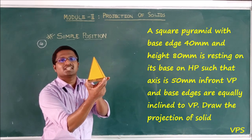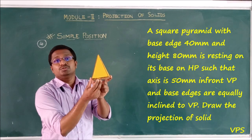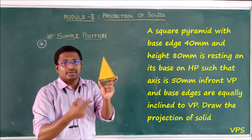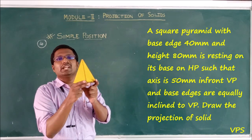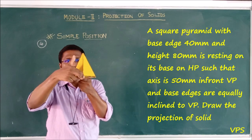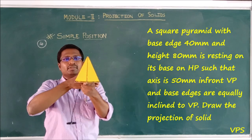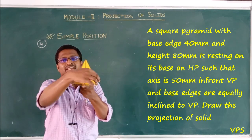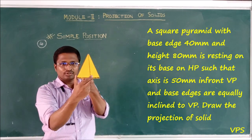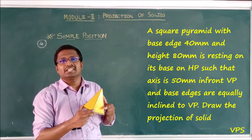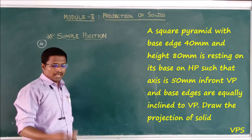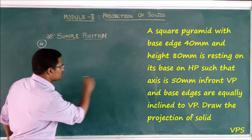The base edges are equally inclined. If they are inclined but not at a particular degree, we call it equally inclined. This goes to the vertical plane — there are two angles and they make equal angles. Equally inclined means, if it is a square, then it will be at 45 degrees inclined.